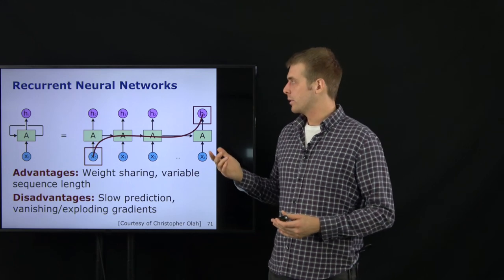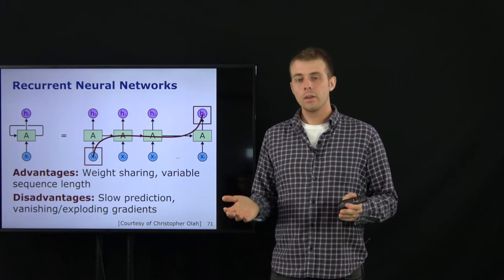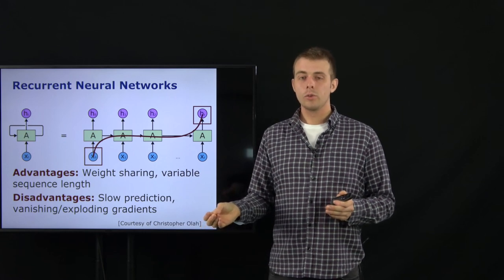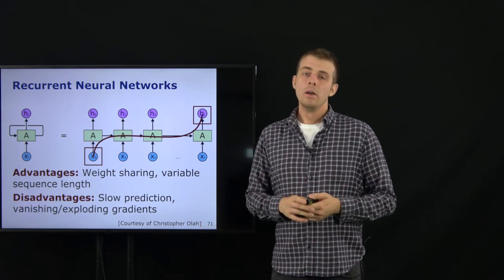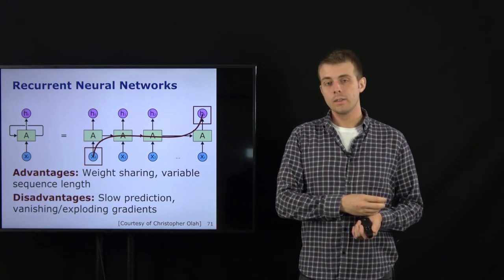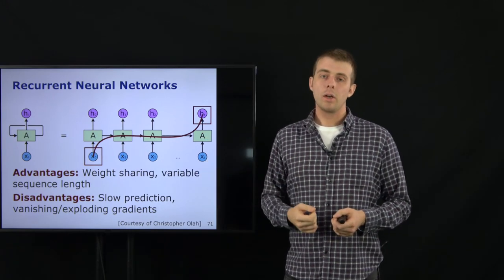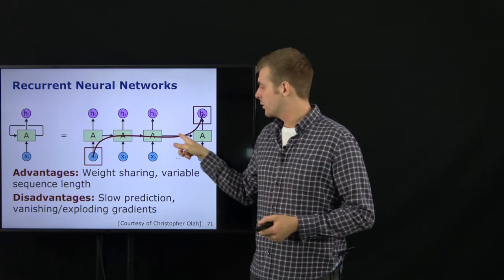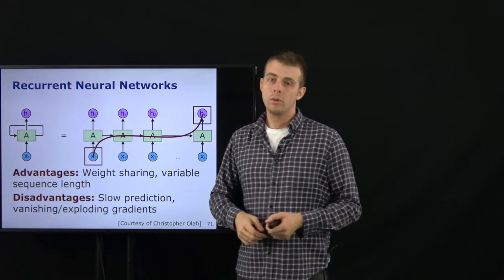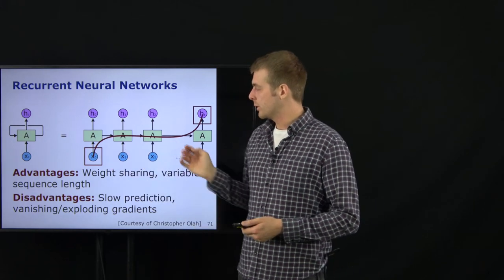Considering this for language processing: if you predict the next word in a sentence and the output depends on the first word, you need to backpropagate through all words in the sequence to get that influence. It is in general hard to maintain information from the beginning of a long sequence, which motivated the development of a solution.